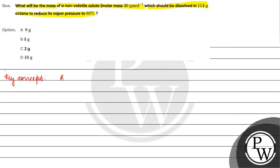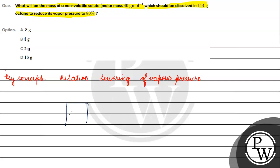The key concept is relative lowering of vapor pressure. We have a solvent, and the solvent molecules have enough energy to go to the vapor state, which exerts vapor pressure.